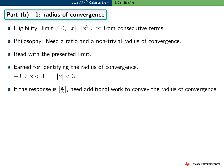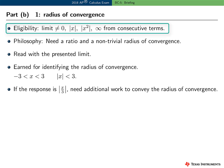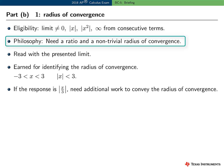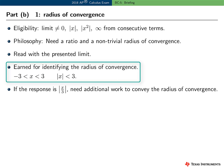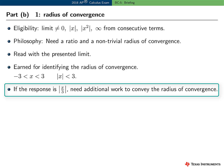The third point in Part B was for the radius of convergence, and there was an eligibility criteria. The limit cannot be 0, the absolute value of x, the absolute value of x squared, or infinity, and the limit must be a result from using consecutive terms. The overall philosophy is that the student needed a ratio and a non-trivial radius of convergence. If the student met the eligibility requirement, then we read with the presented limit. This point was earned for identifying the radius of convergence as 3, but it was okay to present an interval or use the absolute value. However, the response showing the absolute value of x over 3 was not sufficient to earn this point — more work is necessary to convey the radius of convergence.